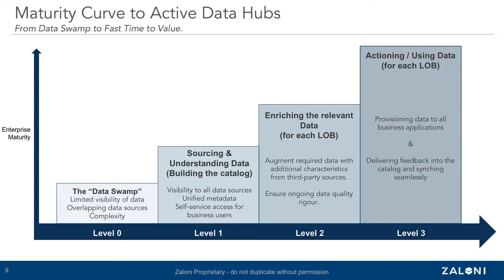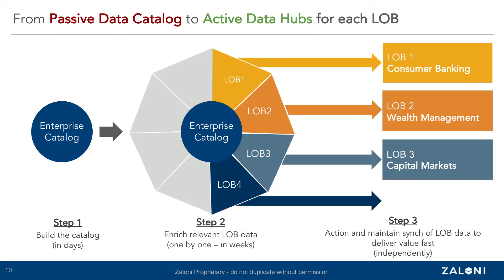It's this maturity curve that allows organizations to adopt an active data hub one phase at a time across one project or line of business, which can truly allow them to provide faster time-to-value with bigger business impact. Now let's take a look at how the maturity curve could be used to help deploy an active data hub via a phased approach.